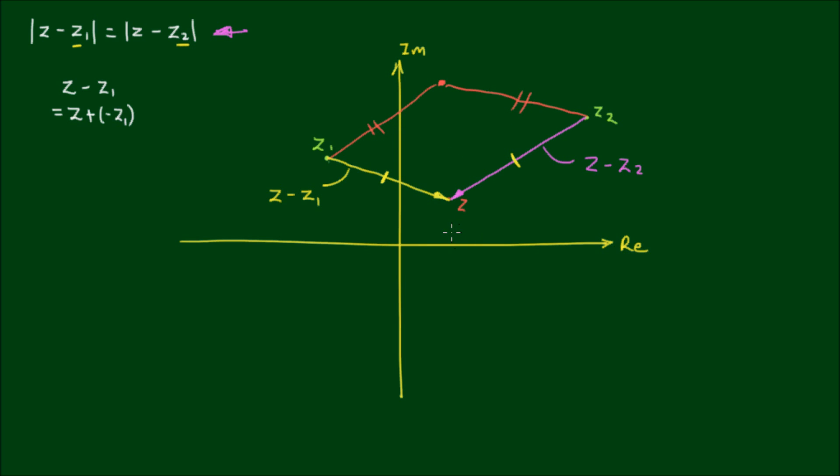And just for good measure, if z was down here, then this distance and this distance must be equal. So what this means is the locus of z is a straight line that sits between these two points.